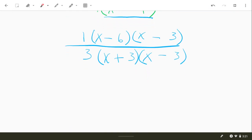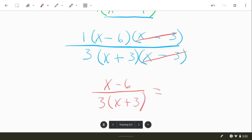Last step here. Notice because you have a factor in the top and bottom, x minus 3 and x plus 3, you can cancel those factors. There's going to be an x minus 6 left up top, and then a 3x plus 3 in the bottom. That's probably good for your answer.